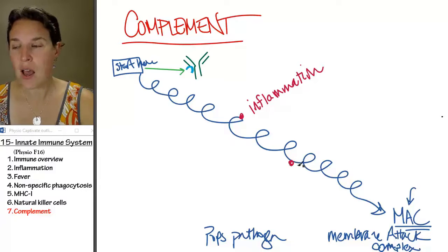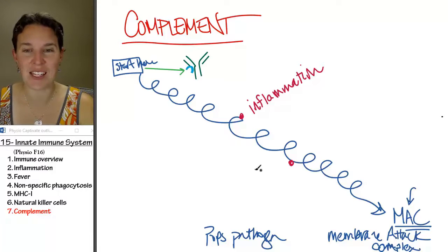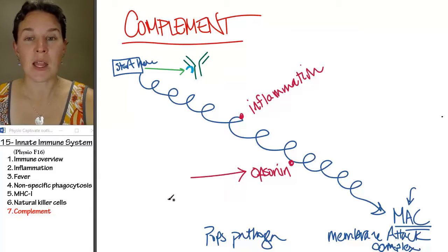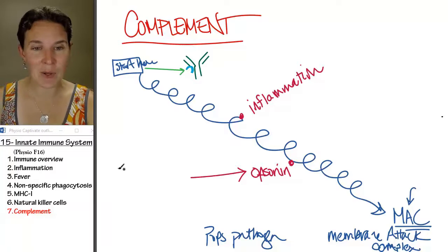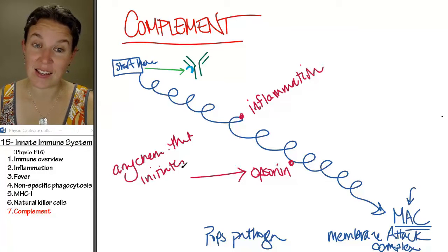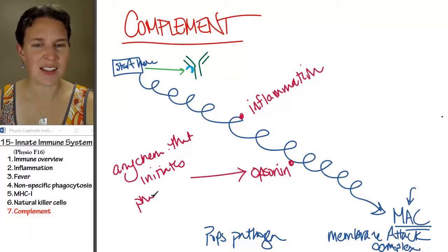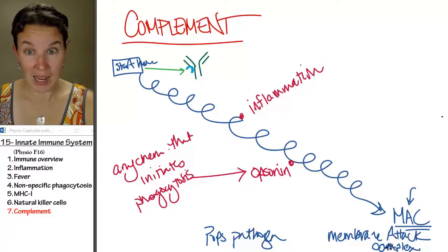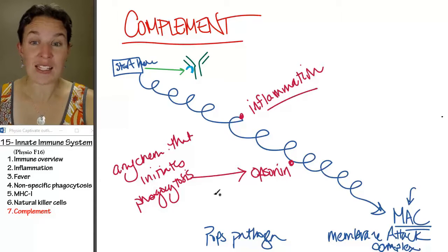Others are opsonins. What does that word mean? An opsonin is any chemical that initiates phagocytosis. So this complement cascade pops the bad guy, but along the way initiates inflammation and phagocytosis.